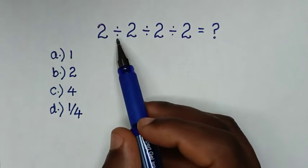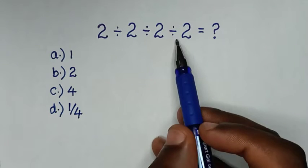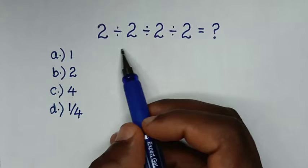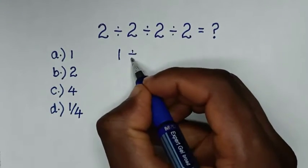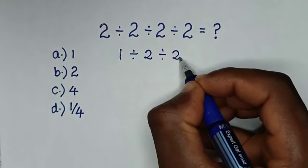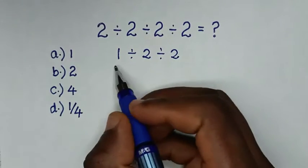We only have division operations here. We start with the first division: 2 ÷ 2 = 1, then ÷ 2, then ÷ 2.